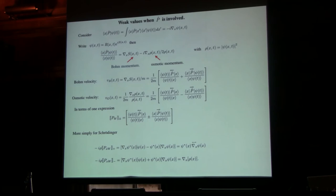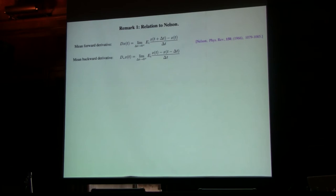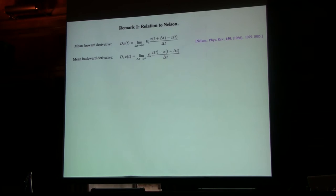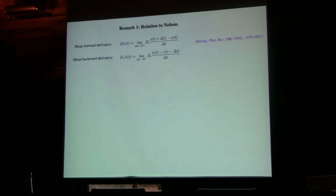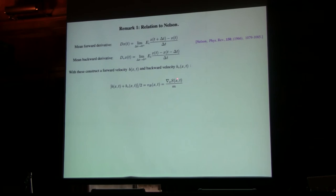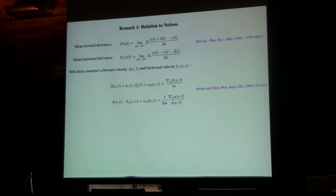Now I want to make two remarks. First of all, go back to Ed Nelson when he was trying to get ordinary Schrödinger equation from a stochastic theory. He introduced a mean forward derivative, a mean backward derivative, which is well known in stochastic theory, how to use these two things. From those you can construct the forward velocity and the backward velocity, and then the sum of the forward velocity and backward velocity divided by two is just the Bohm momentum. And this one turns out to be osmotic velocity, and Bohm and I discussed this way back in ancient history.